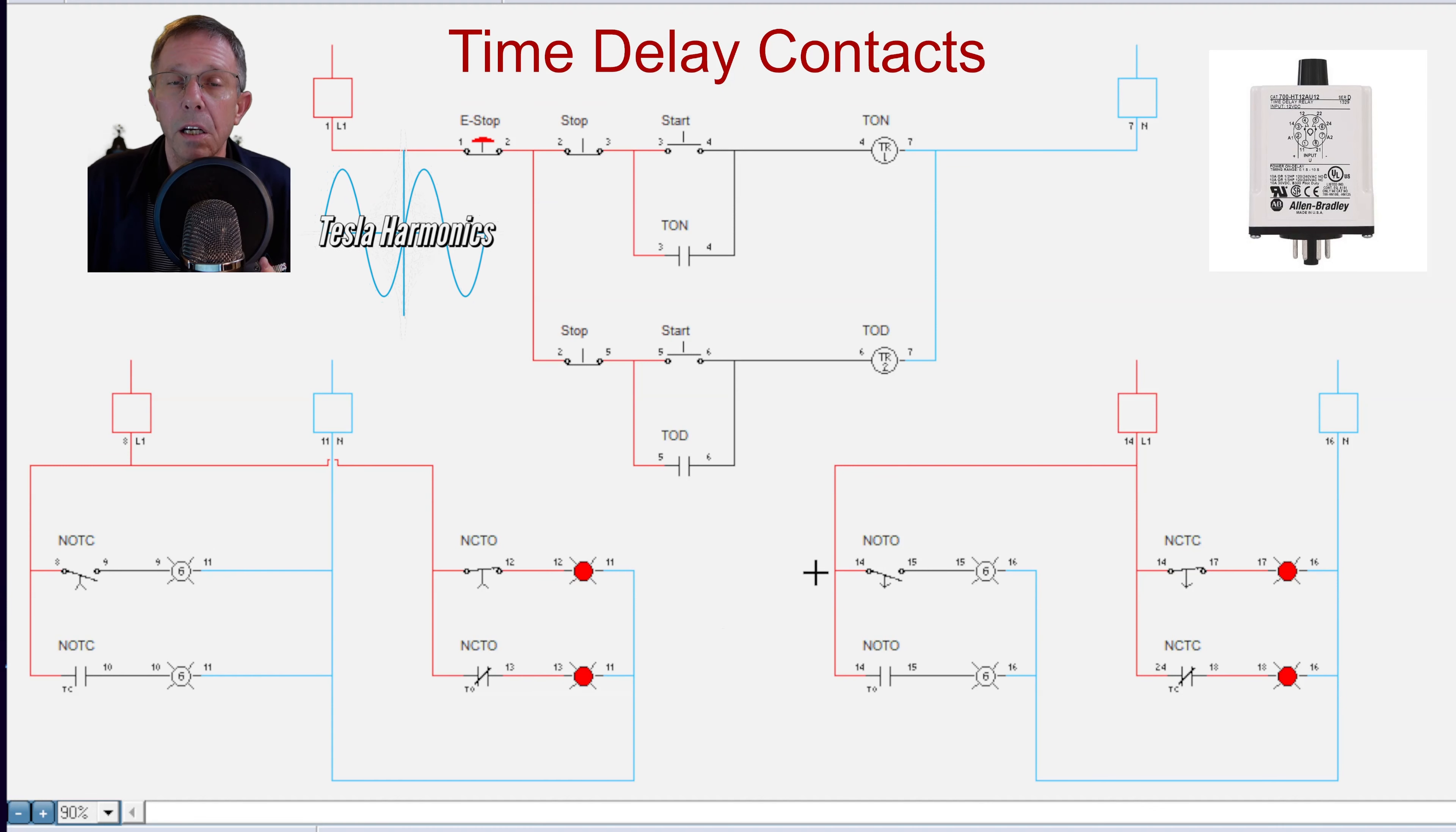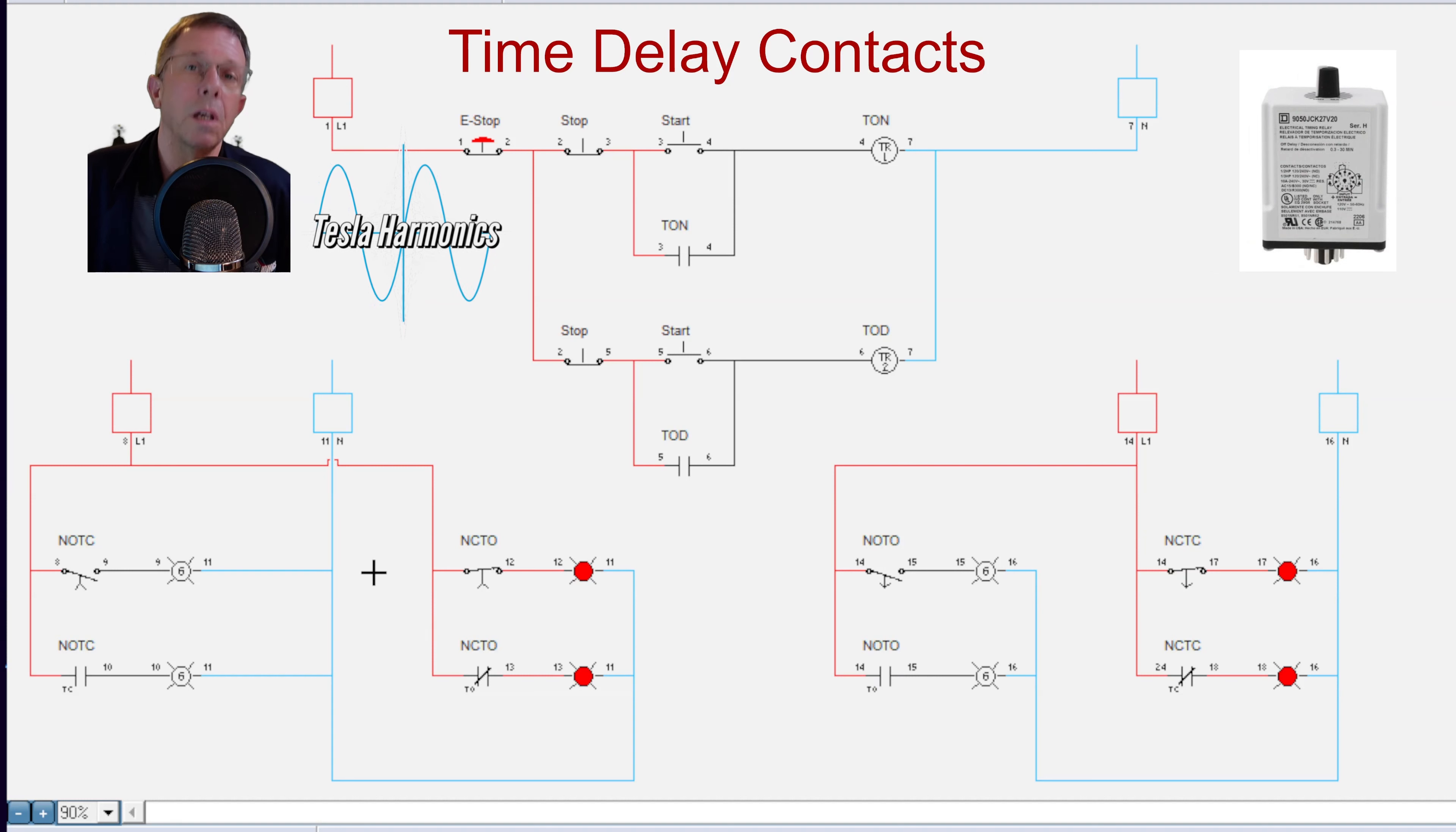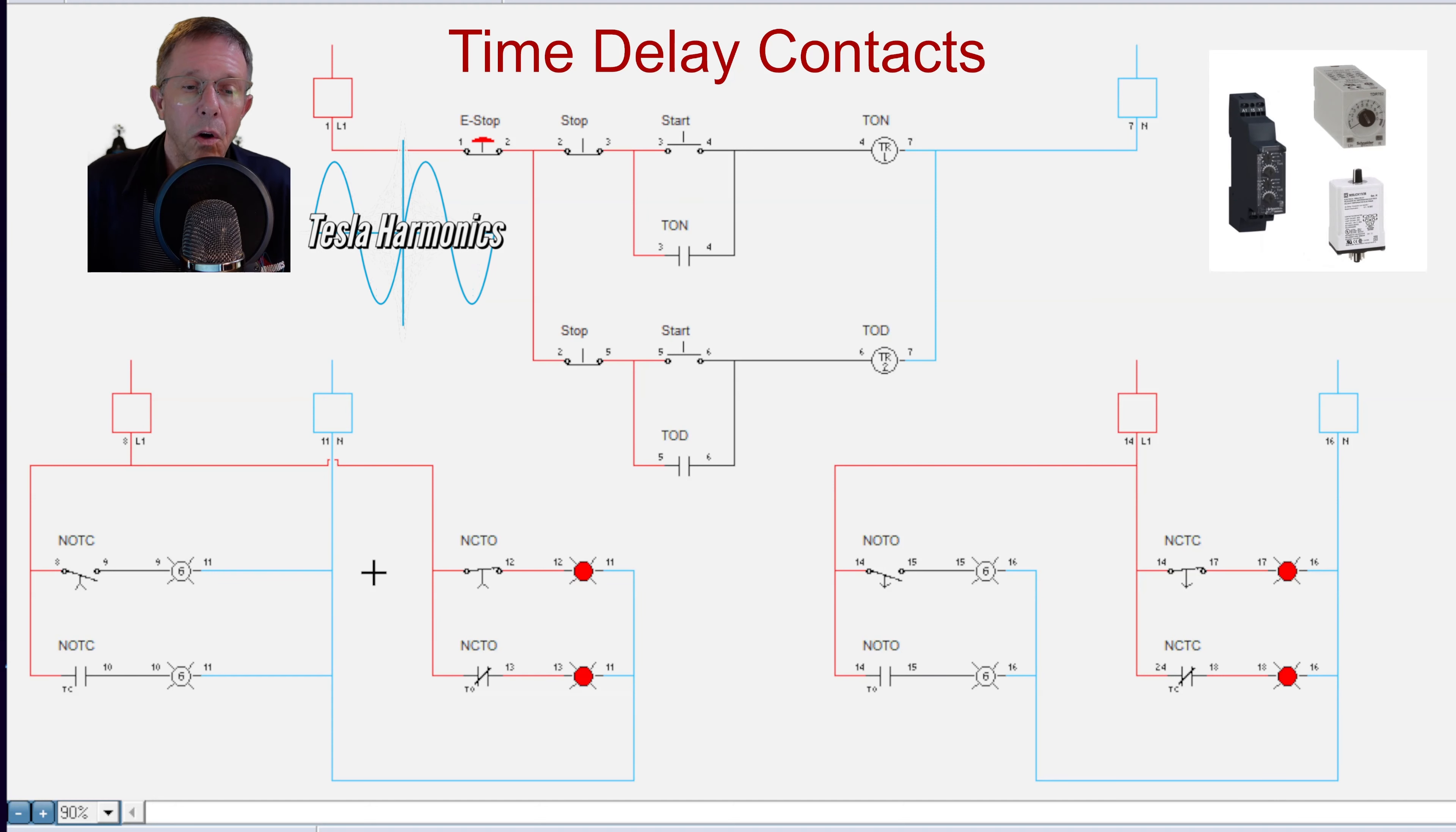Or I could use a normally closed and it would make it time open. So I can use an open contact on a time on delay and it delays the timing on like you would expect, but I can also use a normally closed and it would be energized at first while the timer is counting, and then when it's done counting it would go open.